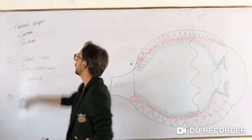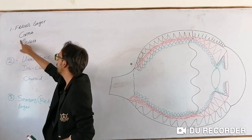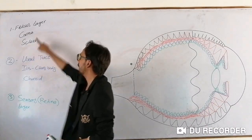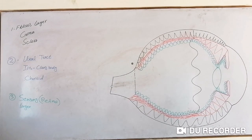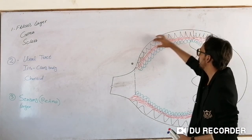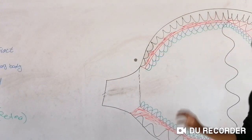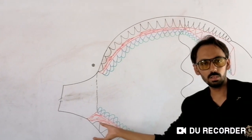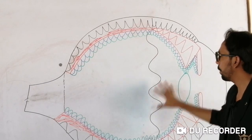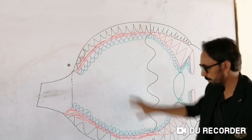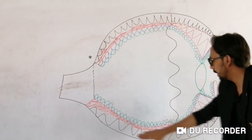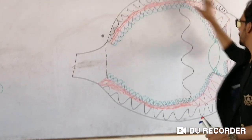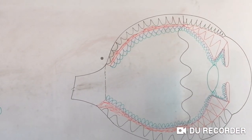The first layer of our eyeball is the fibrous layer. The structures of the fibrous layer are the cornea and the sclera. The cornea is one-sixth of the eyeball. The sclera is the blackish portion, which is the protective layer that protects all the composition of the eyeball. Together, the cornea and sclera form the fibrous or protective layer of the eyeball.